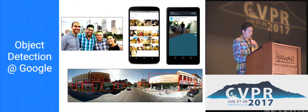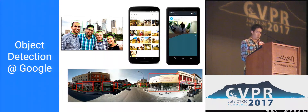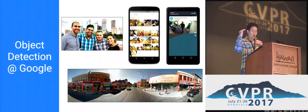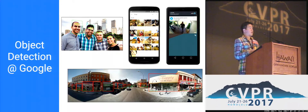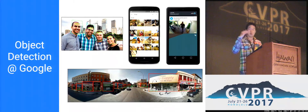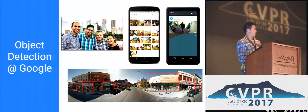We have teams like Street View that want high recall and high precision, but they can afford to use powerful machines running large batch jobs periodically. On the other hand, we have some teams like Nest, who absolutely require on-device inference, but they're willing to sacrifice a little bit in accuracy.